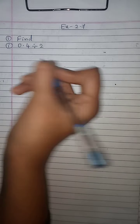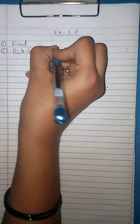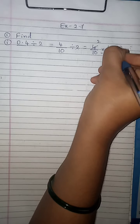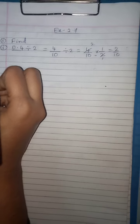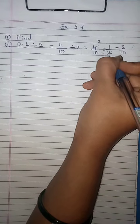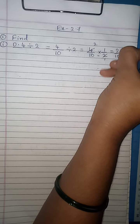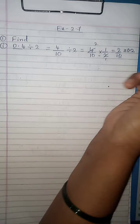First one: find 0.4 divided by 2. Convert this into a fraction: 4 by 10, divided by 2. This equals 4 by 10, take the reciprocal of 2, which is 1 by 2. You get 2 by 10. On dividing a decimal by 10, the decimal point is shifted to the left by 1 place. After 1 digit, give the decimal point — you get 0.2.